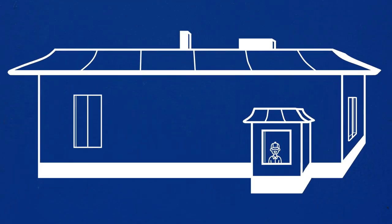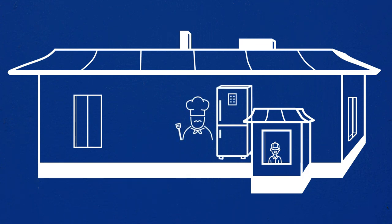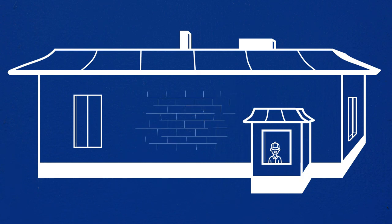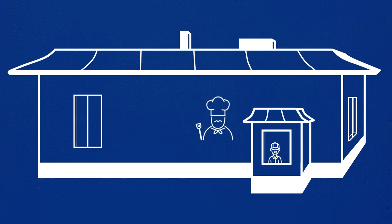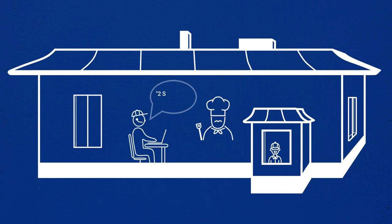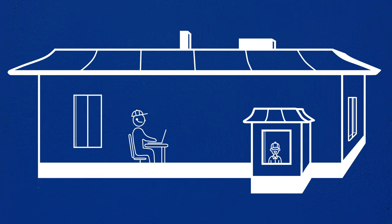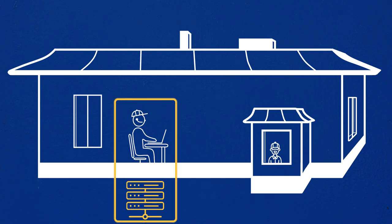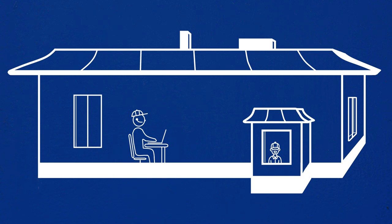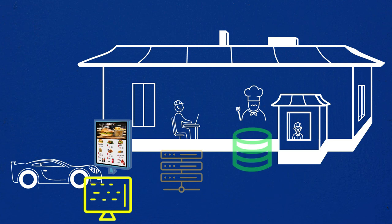The back-end in this story, as you may have already guessed, is the kitchen chef and kitchen equipment — both hidden from the customer. The chef receives the order from the drive-thru operator and then proceeds with the request. The drive-thru operator works as the server, which helps the front-end communicate with the back-end.